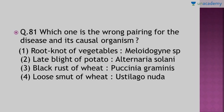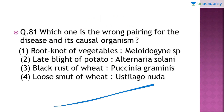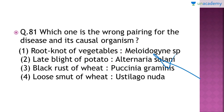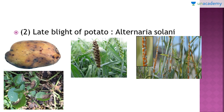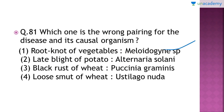Question number 81: 'Which one of the following is the wrong pairing for the disease and its causal organism?' The answer is option number 2 — late blight of potato is not caused by Alternaria solani but is actually caused by Phytophthora infestans. Root knot of vegetables involves the formation of knot-like structures in the roots of plants.